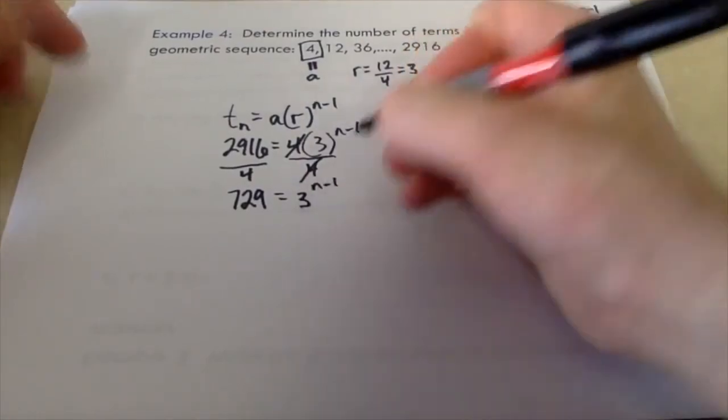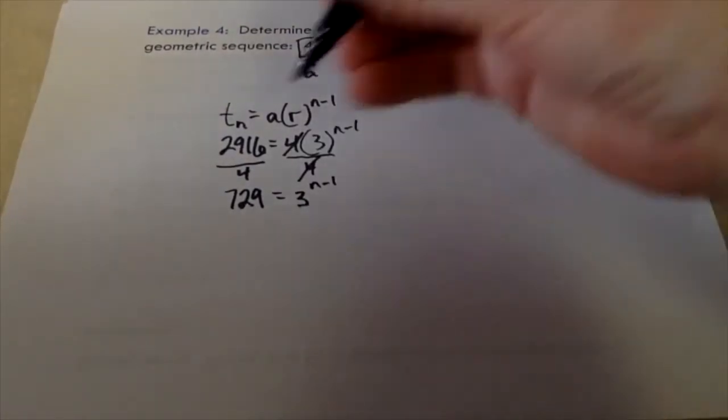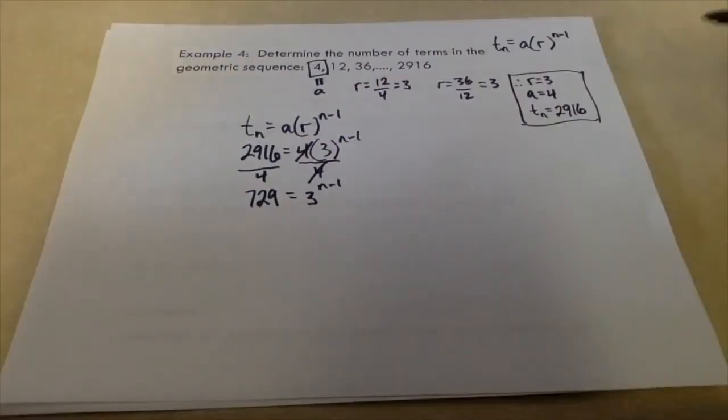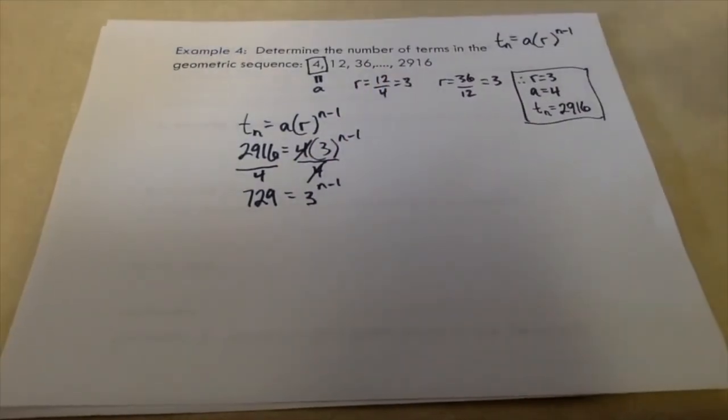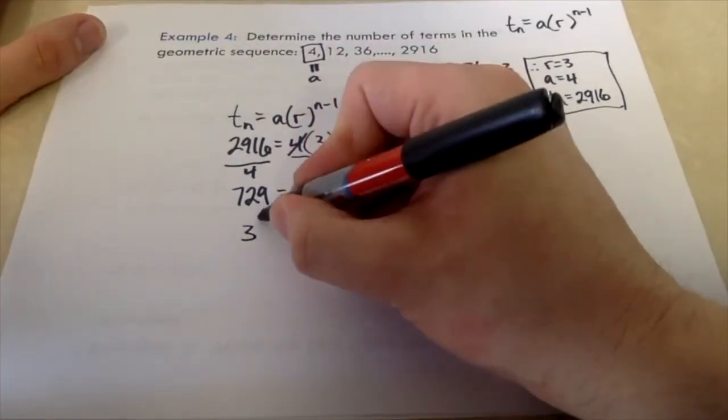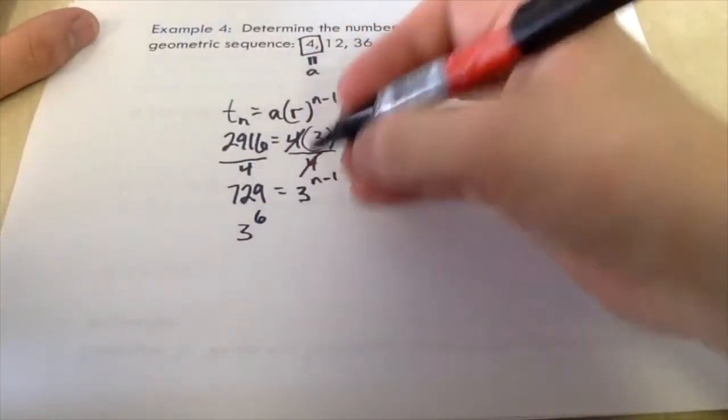We could solve an equation like this by taking this big ugly number and writing it as a base of 3. We can write it as 3 to some power, we should be able to solve for n. So through trial and error, you could tell that if you took 3 and raised it to the power of 6, you'll get 729.